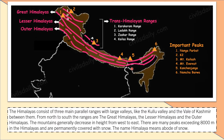The Himalayas consist of three main parallel ranges: the Greater Himalayas, the Lesser Himalayas, and the Outer Himalayas. The Greater Himalayas are the highest and lie to the northernmost. Towards the south we have the Lesser Himalayas, or the Middle Himalayas, also called the Himachal. Further south we have the Outer Himalayas, or the Shivaliks. In between the parallel ranges there are several valleys, the most important being the Vale of Kashmir and the Kullu Valley.